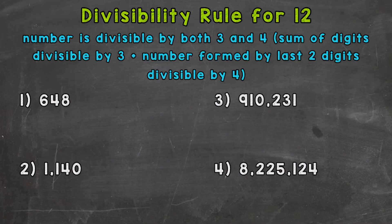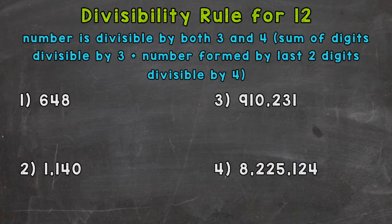In this video, we'll go through four examples and see if those numbers are divisible by 12 based on the rule at the top of the screen. If a number is divisible by both 3 and 4, it will be divisible by 12 as well. For the divisibility rule for 3, we find the sum of the digits, and if that sum is divisible by 3, then the original number is divisible by 3. And for 4, if the number formed by the last two digits is divisible by 4, then the original number is divisible by 4.